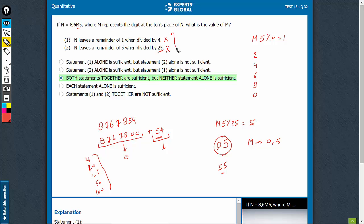Now we need to combine. On combining, we see that there is only one possible value that is satisfying both the cases, and that value is 0. Therefore, what is the value of M? On combining, we know that M is equal to 0. Combining led to a unique answer. Therefore, the right answer choice here is option C.